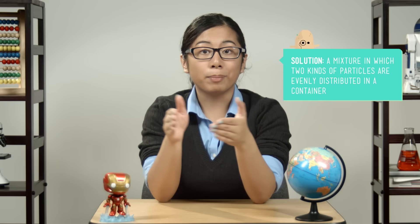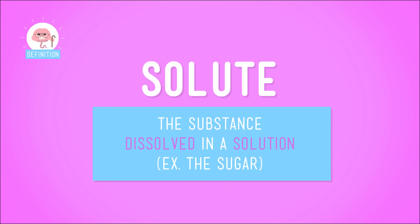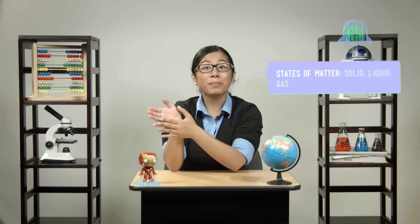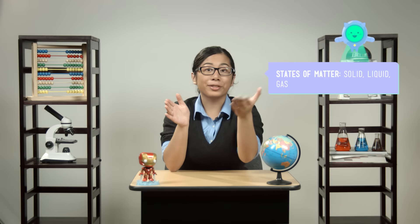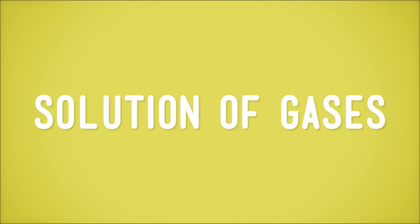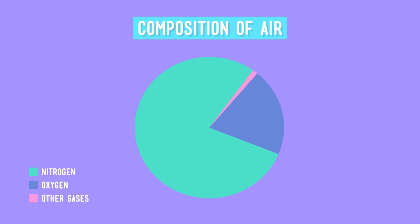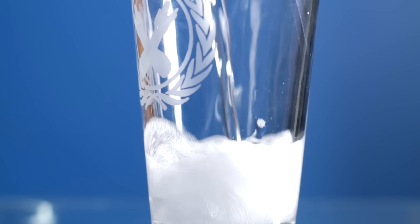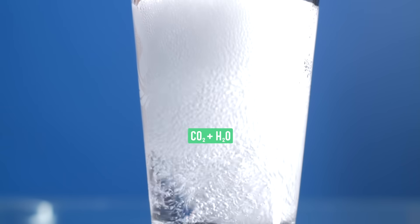We call this kind of mixture a solution. Solutions have two main parts: the solute, which is the stuff that dissolves — in this case the sugar — and the solvent, which is the stuff in which the solute dissolves, in this case the water. Solutions can be made from types of matter that are in different states too. For example, the air that we breathe is made up of a solution of gases — mostly nitrogen, oxygen, and carbon dioxide. And soda water is really a solution of carbon dioxide gas and liquid water.